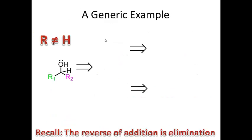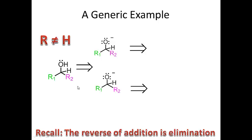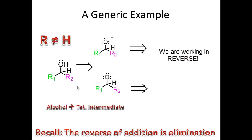Here's a generic example. We have an alcohol, and we need to remember that the reverse of addition is elimination — that's how we work backwards. R1 and R2 cannot be hydrogen; I'm looking to make a Grignard plus an aldehyde or ketone since I'm starting with an alcohol in the product. So I go from the alcohol to the tetrahedral intermediate, removing the proton and going back to the intermediate.